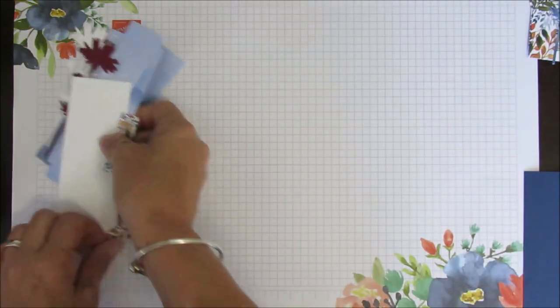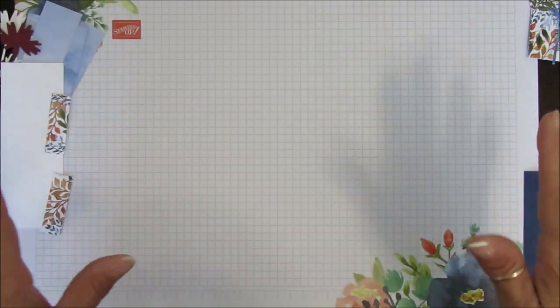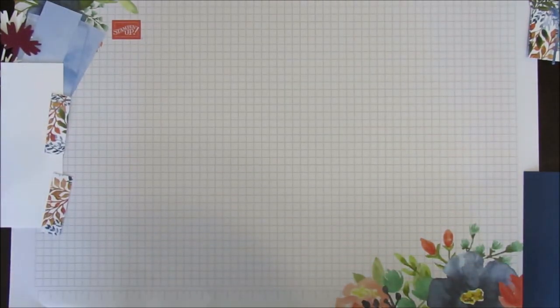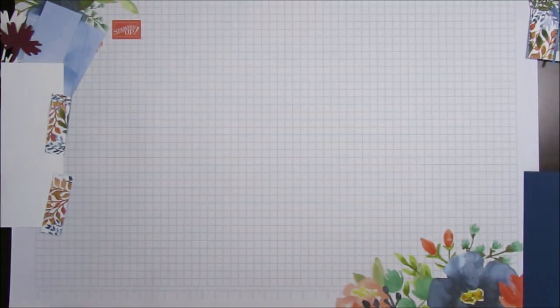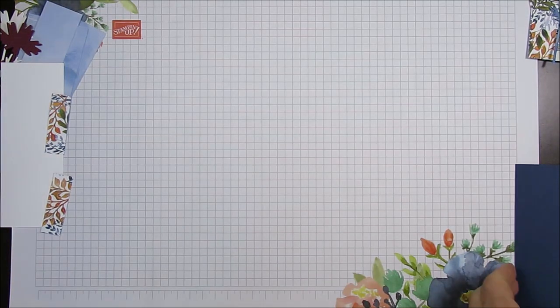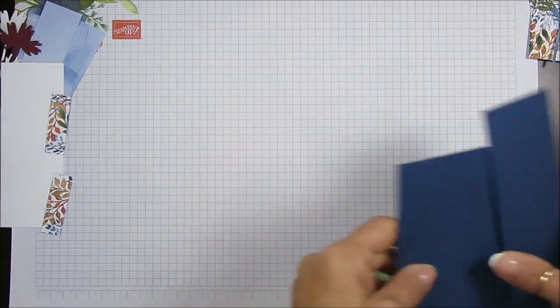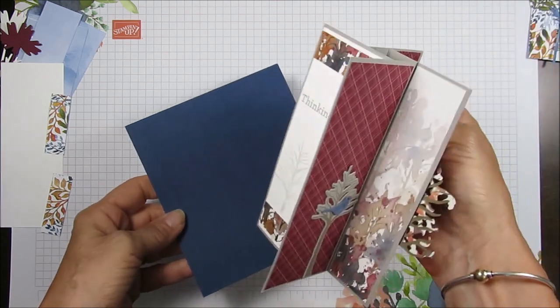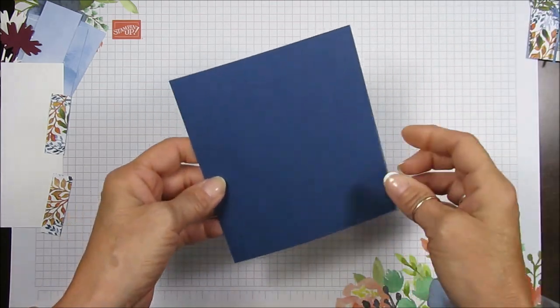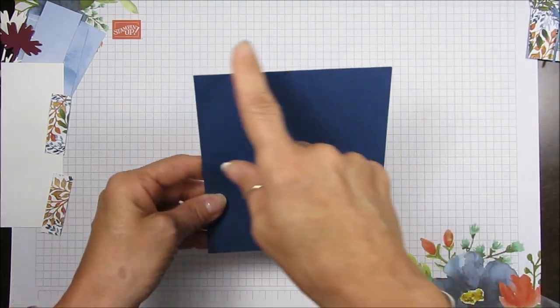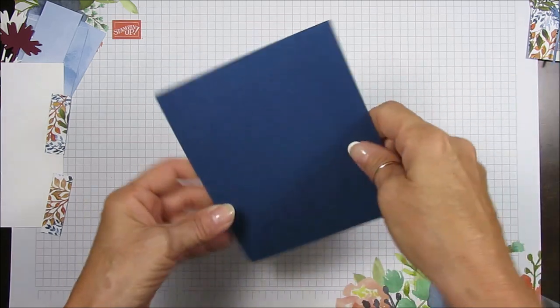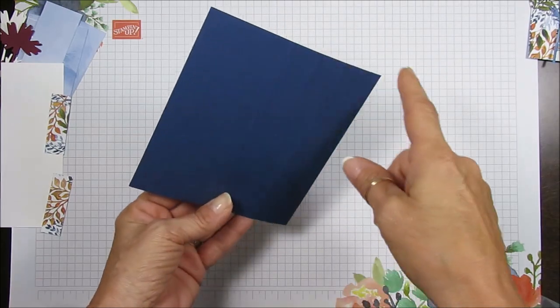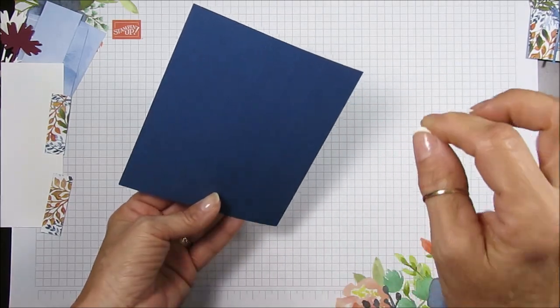What you're going to need, I will have all measurements on my blog, so don't worry about marking anything down. We're starting with the base, this one's Night of Navy. This one was Gray Granite. We're starting with five and a half this way and then four and seven-eighths.